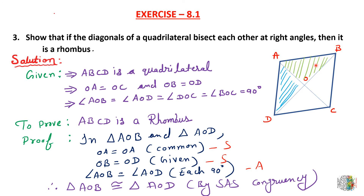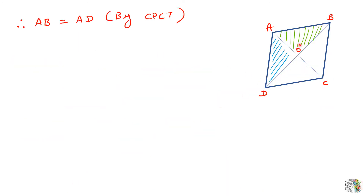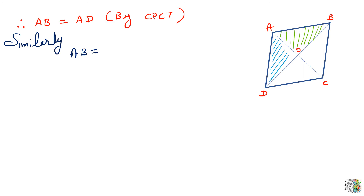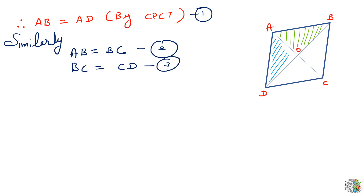We have proved that these two triangles are congruent. As these two triangles are congruent, by CPCT we can say that AB is equal to AD. Similarly, by taking other pairs of triangles, AB is equal to BC (equation 1), and BC is equal to CD (equation 2).